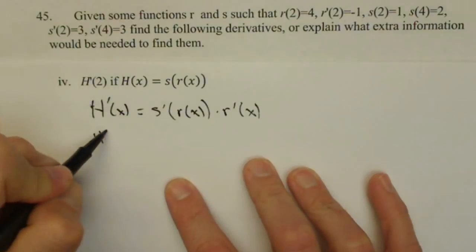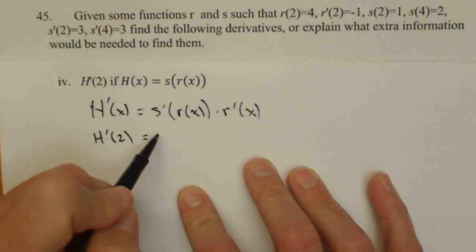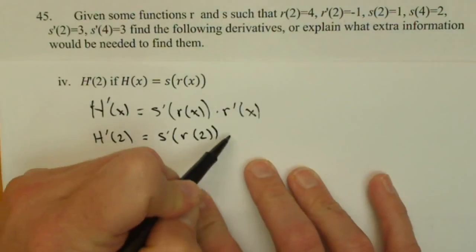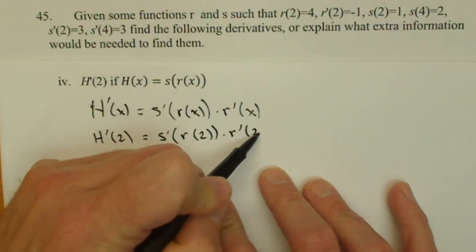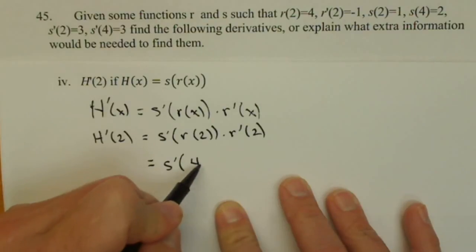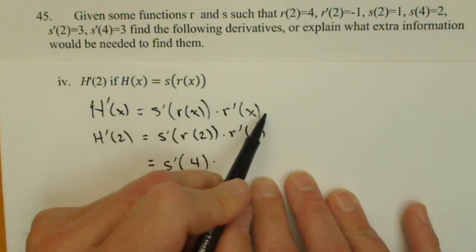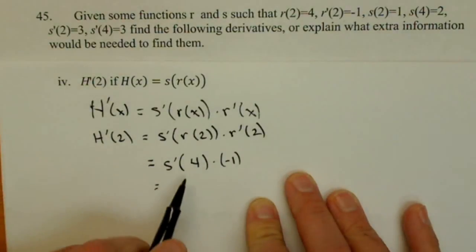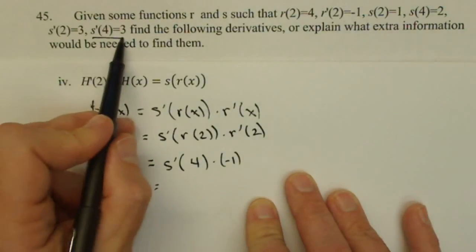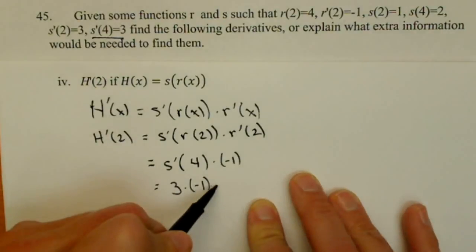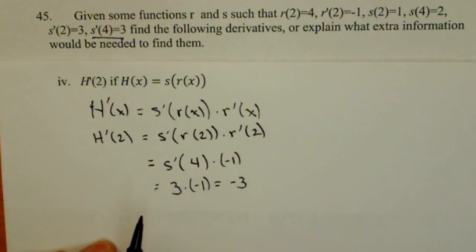So, then H prime of two equals s prime of r of two times r prime of two. So, again, let's see if we have enough values this time. So, s prime, r of two is four, r prime of two is negative one. This time we're okay because we do know s prime of four right here. It's three times negative one. So, our result is negative three.